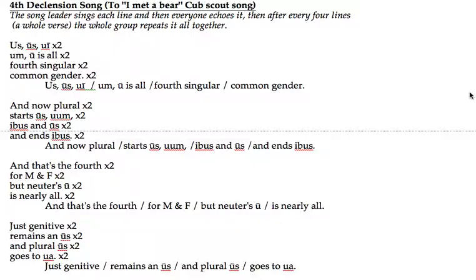So a little bit of commentary here. If you want to know the common or masculine-feminine endings, just the first two verses will get you through that. But then when you get to the third and fourth verses, it says 'that's the fourth for M and F, but neuter's oo is nearly all.' That's referring to the fact that in the singular of the neuter fourth declension, you get ūs in almost every case. It says just genitive remains an ūs — other than the genitive singular, all of the singular fourth declension endings are ū, just a long ū. And then it says 'and plural ūs goes to ū,' so in the plural of fourth declension, instead of ūs in the nominative, accusative, and vocative plural, you get ū. And those are the differences for the neuter.